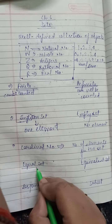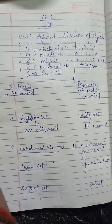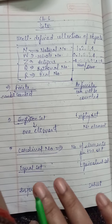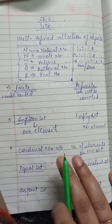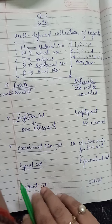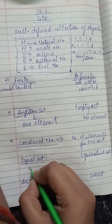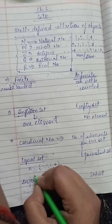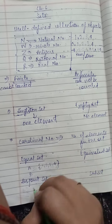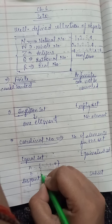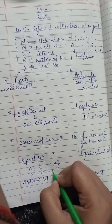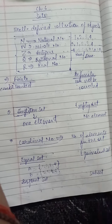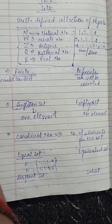Next we have equal sets. When two sets contain exactly the same number of elements and the same elements, then they are called equal sets. For example, set A = {1, 2, 3, 4} and set B = {2, 1, 4, 3}. They have four elements and all the elements are the same, so they are equal sets.